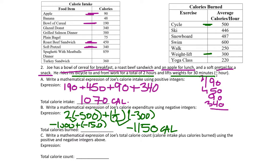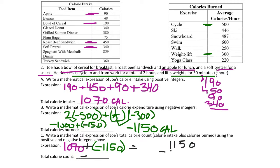To figure out Joe's total calorie count, we combine calories taken in from food — 1070 — with calories burned from exercise — -1150. He burned more than he took in, so the answer is negative. Taking 1150 minus 1070 gives 80, so Joe has burned a net 80 calories so far today.